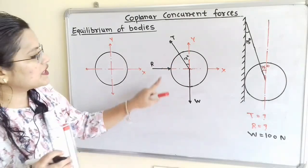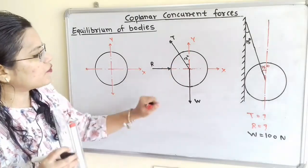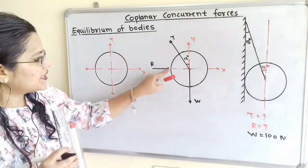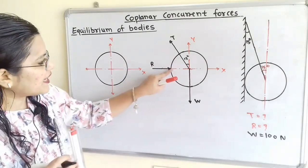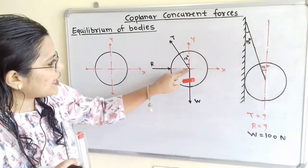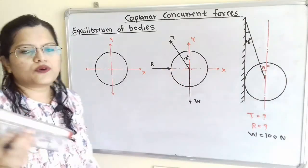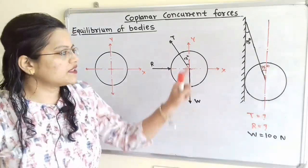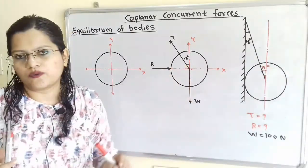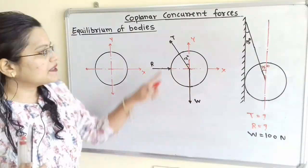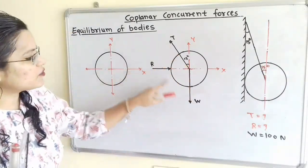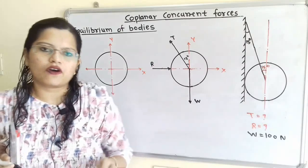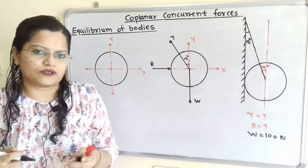If we observe, there are three forces. If we extend R, it also passes through center O. That means these three forces are concurrent forces.